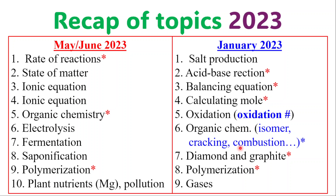For organic chemistry on January 2023, they specifically talked about isomers, cracking, and combustion. In fact, on January 2023 there were two organic chemistry questions — I think question five and question three. They covered cracking, isomers, combustion, polymerization, and reactions of homologous series. Pay attention to those. Diamond and graphite was tested twice within the past three years. Also look out for gases and the production of gases — that's very important.